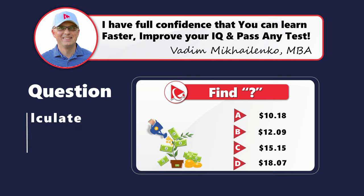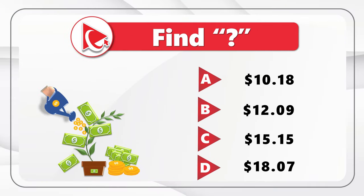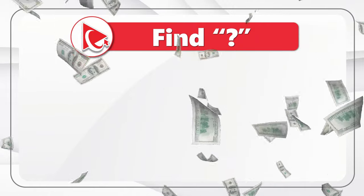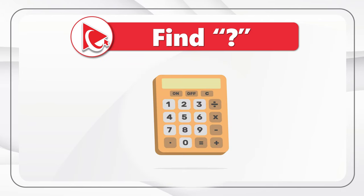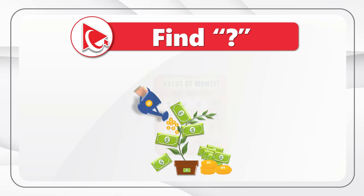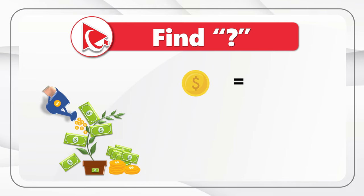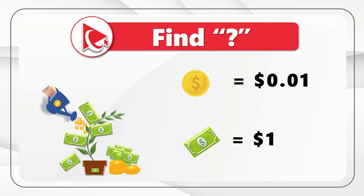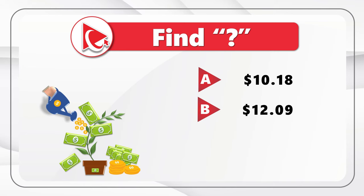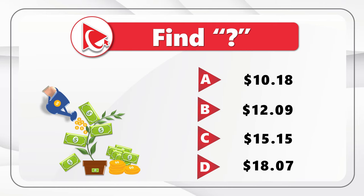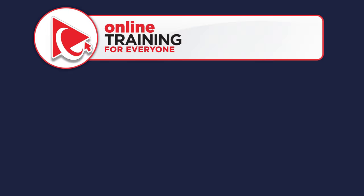Have you ever dealt with the money tree? Now it's your opportunity to check your attention to details. You're presented with a money tree making enterprise and you need to calculate the total value of money that you see in the picture. Each coin is one cent and each bill equals one dollar. Once you complete the calculations, please select one out of four possible choices: Choice A — $10.18, Choice B — $12.09, Choice C — $15.15, and Choice D — $18.07.